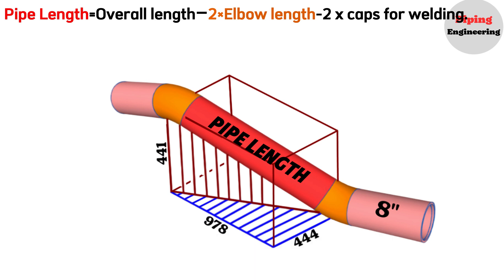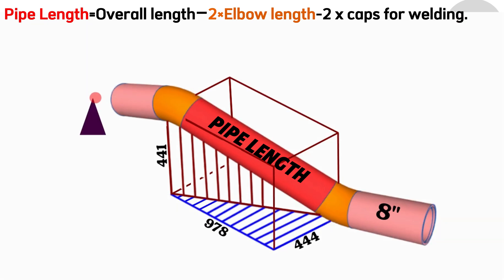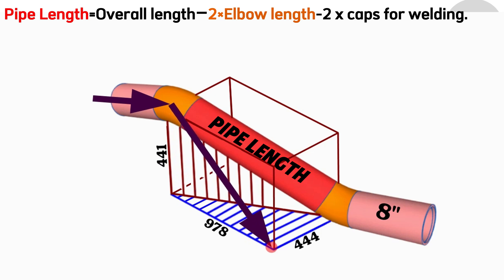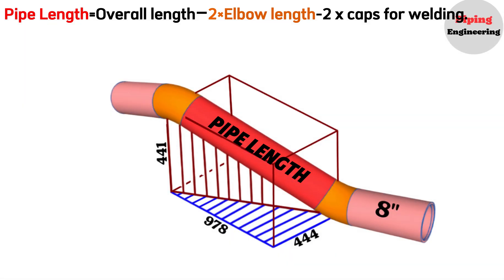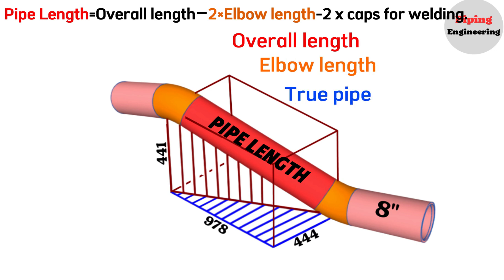Let's denote the overall length or the center-to-center distance between the elbows as L. The double rolling part of the pipeline is easier to understand when visualized within a right-angled parallelogram. The 8-inch pipeline extends southwards. At the top-right corner of the parallelogram, the pipeline first descends by 441 mm, then continues southwards for 978 mm before turning eastwards for 444 mm. At the bottom-left corner, the pipeline again continues southwards. During the double rolling of a pipeline, two right-angled triangles are formed using dashed lines. We will use these triangles to calculate the overall length, elbow length, and true pipe length.